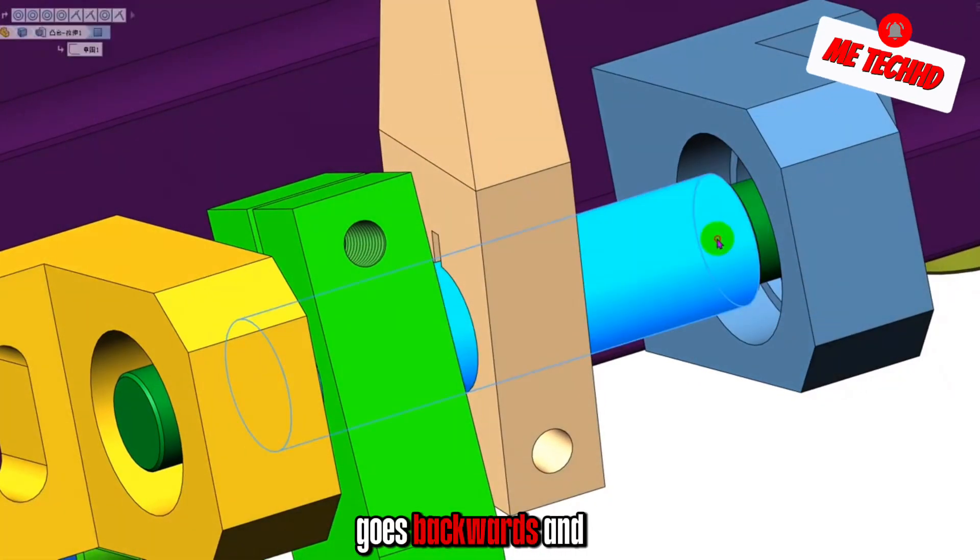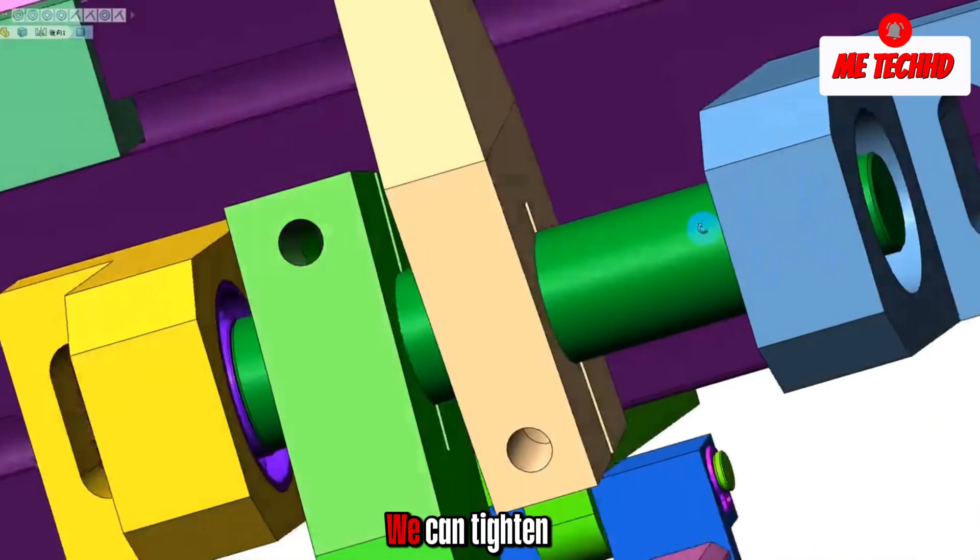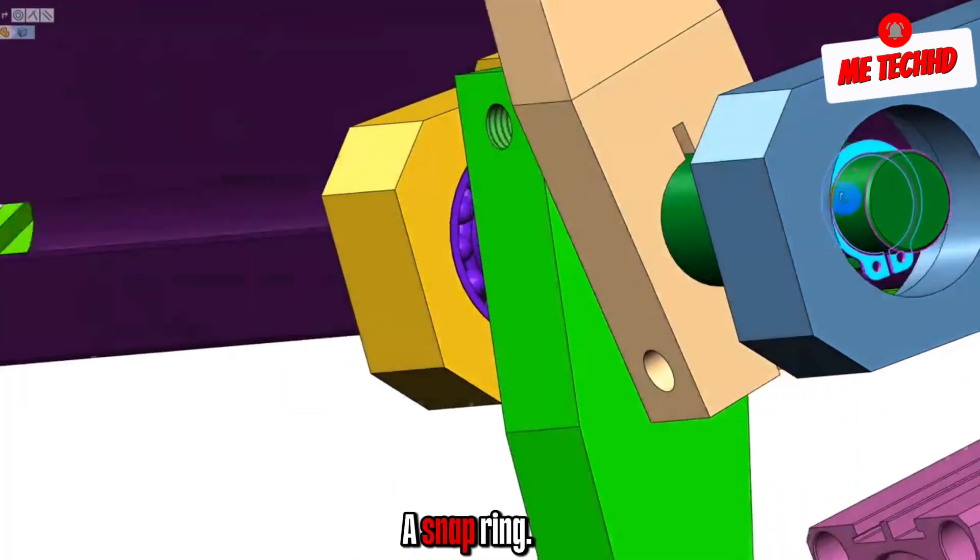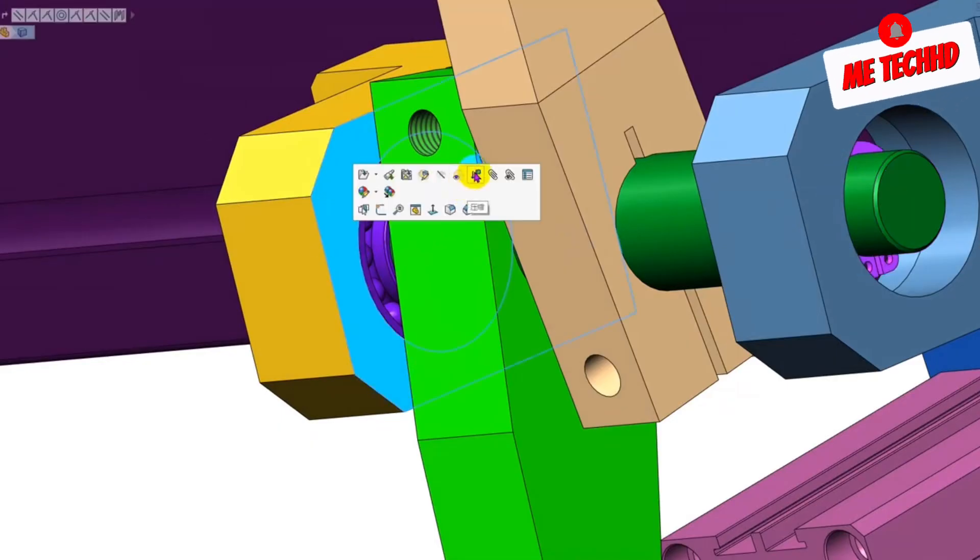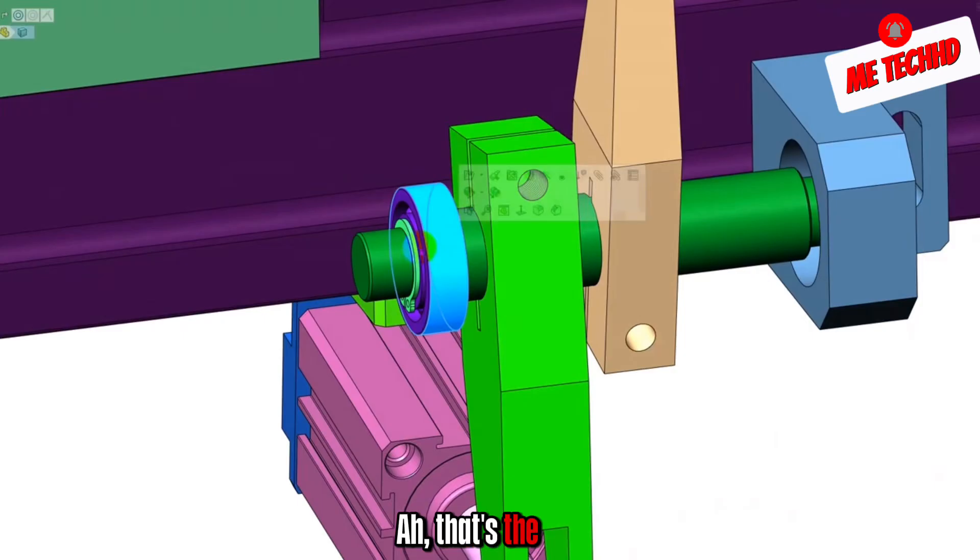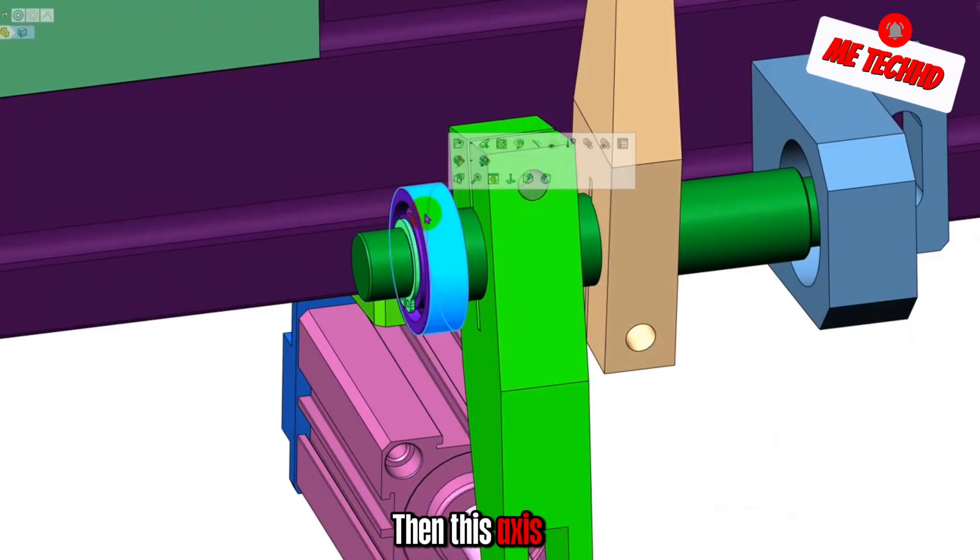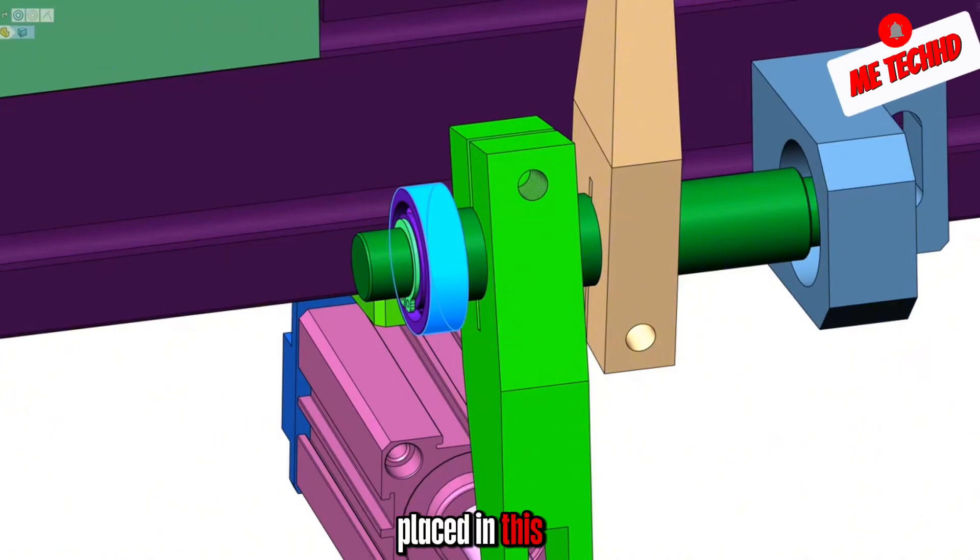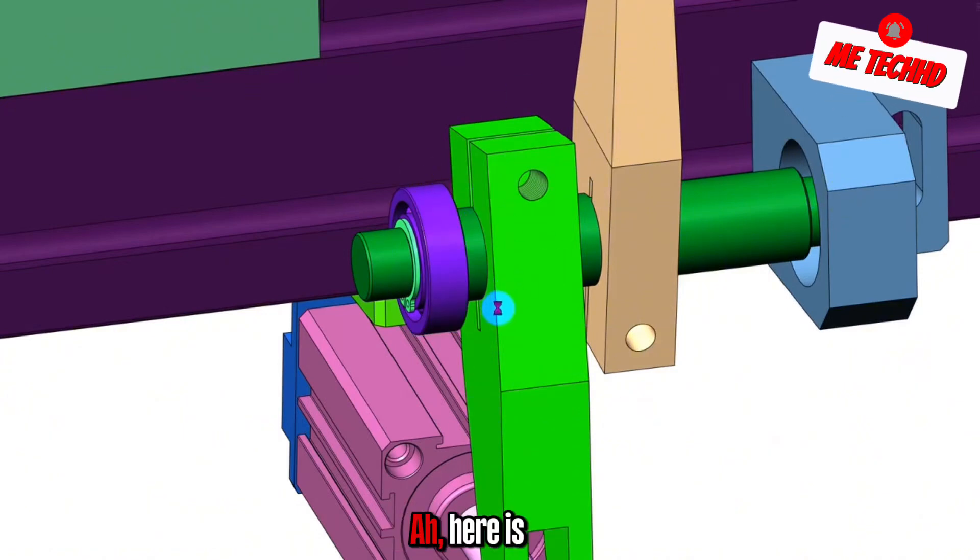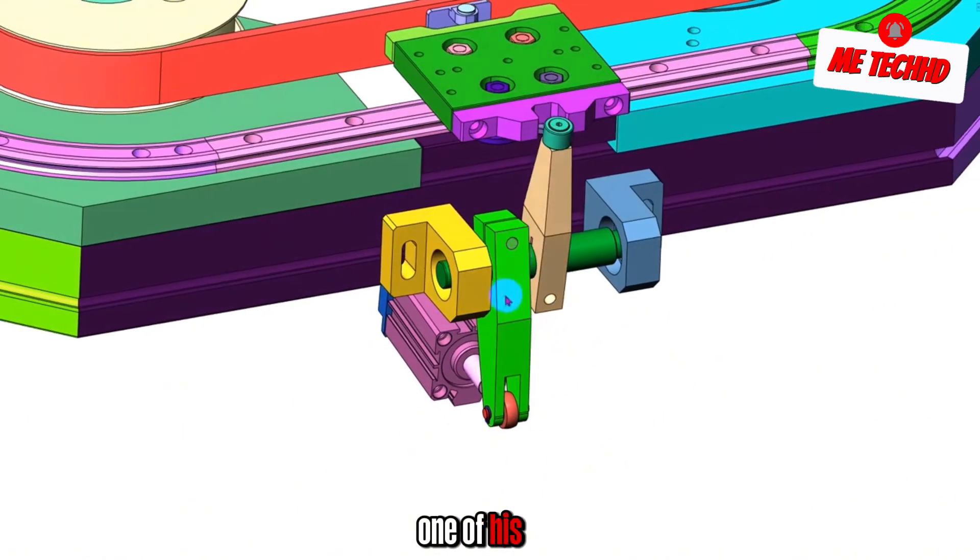And the shaft goes backwards and forwards. We can tighten it through a snap ring. That's the shaft. The snap ring is stuck on this shaft. Then this axis. This bearing is placed in this bearing housing list. Here is one of his overall structures.